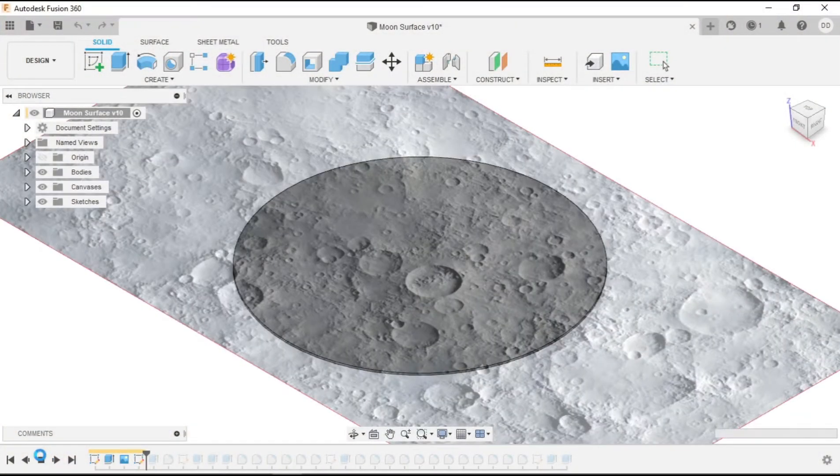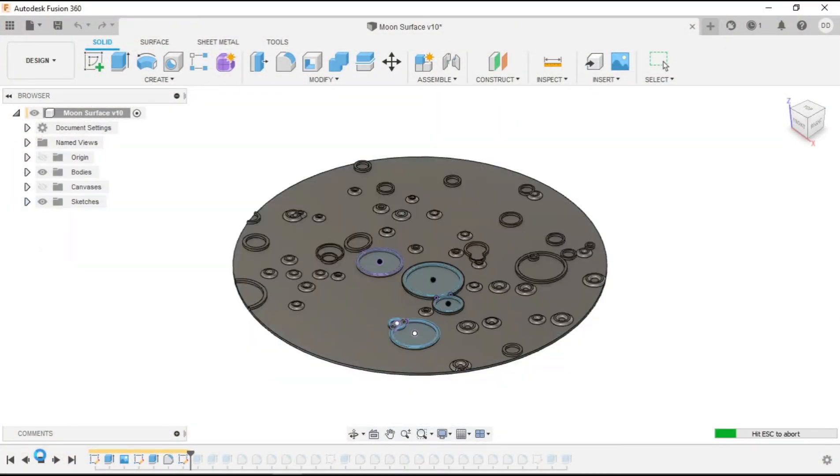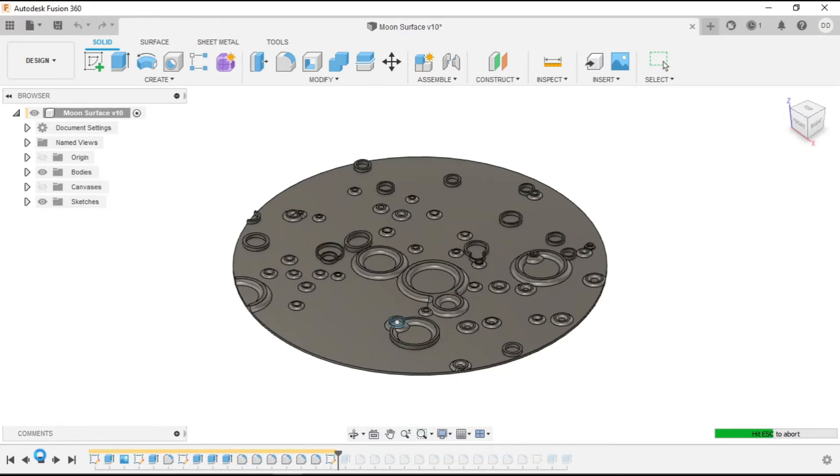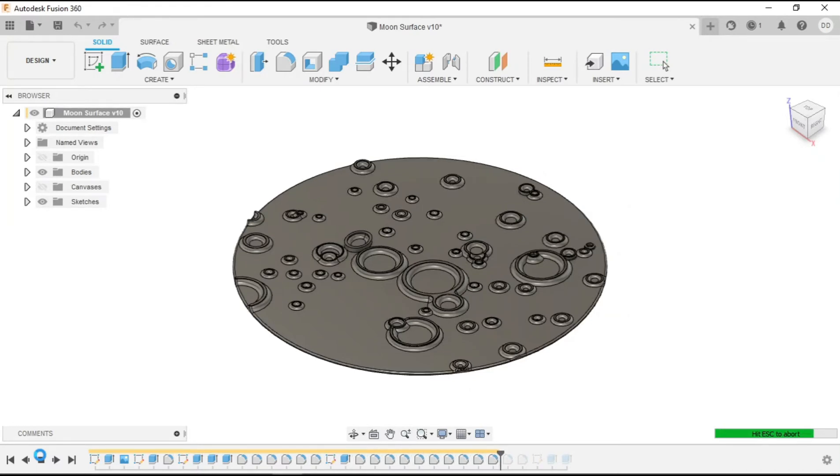I started off by designing the surface of the moon that would cover the base of the magnet coil. I used a sketch I found online to develop the texture and surface of the moon. I then used a couple of different extruded heights and fillets to develop the craters and get the overall look and feel I wanted.